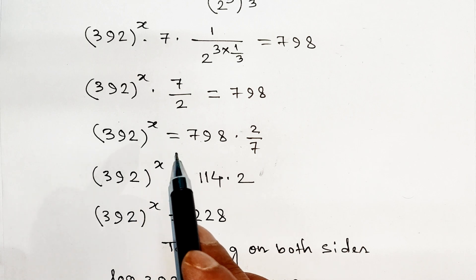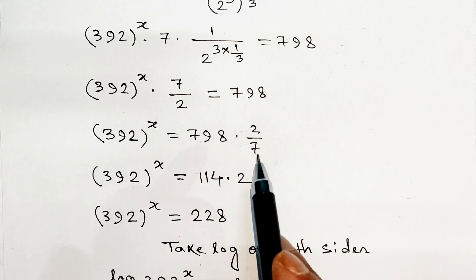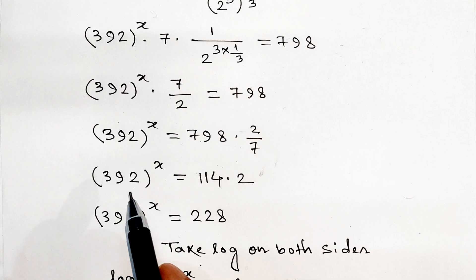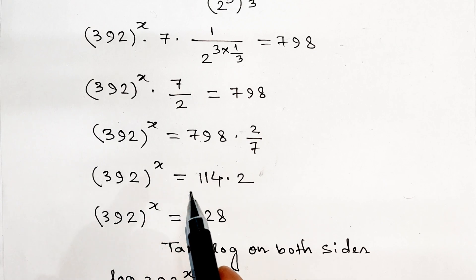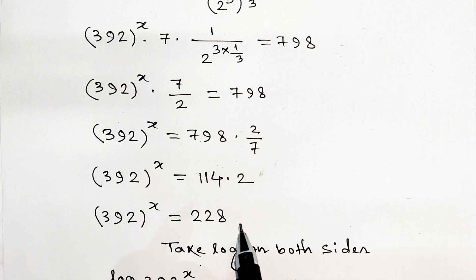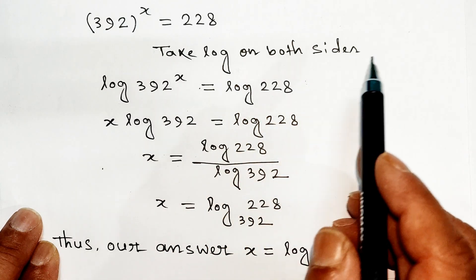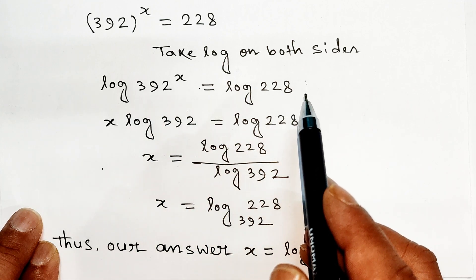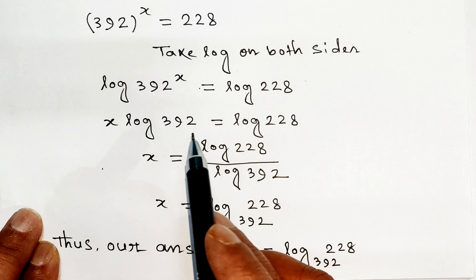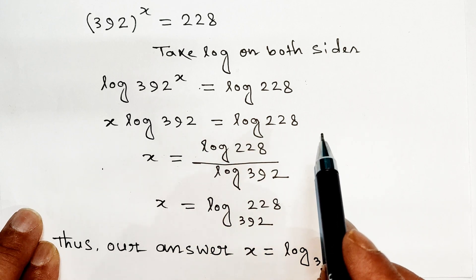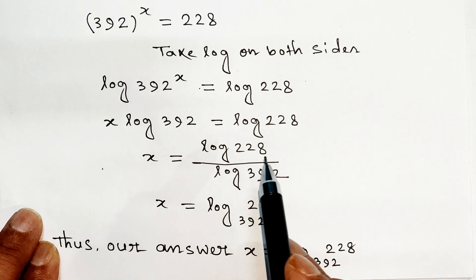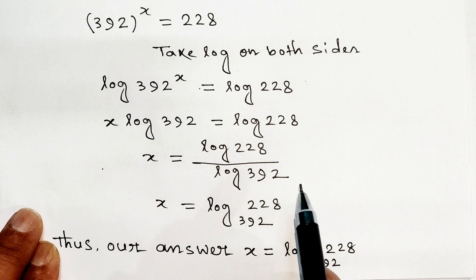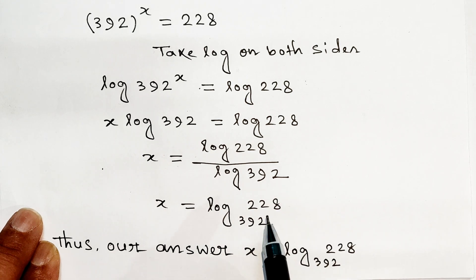392 to the power x equals 7.98 into 2 divided by 7. That gives 392 to the power x equals 2.28, or equivalently 228. Taking log on both sides: log 392 to the power x equals log 228, so x log 392 equals log 228, therefore x equals log 228 divided by log 392, which is log 228 base 392.